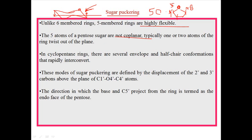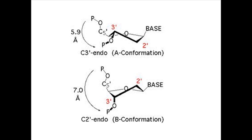When talking about puckering, puckering helps to maintain this kind of structure. If some part of this carbon ring points upward, they are actually pointing upward to align themselves close together towards the bases for good attachment of the bases with them.